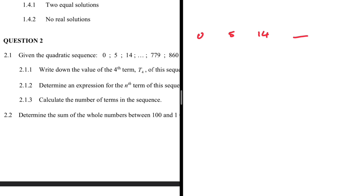The difference between 0 and 5: 5 minus 0 gives us 5. Then 14 minus 5 gives us 9. Now 9 minus 5 gives us 4, and that is the second common difference.